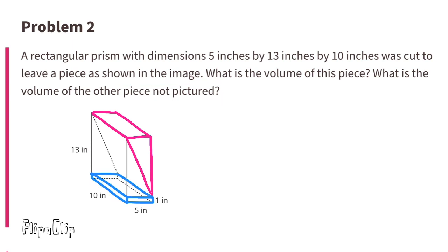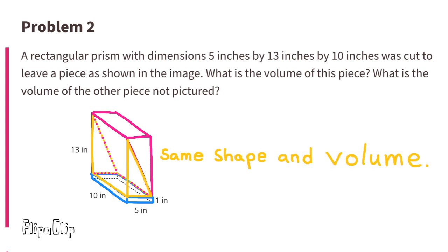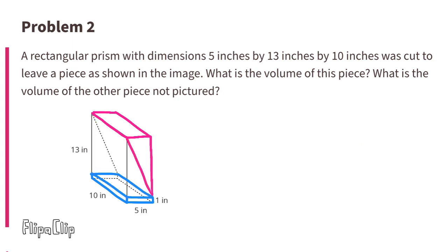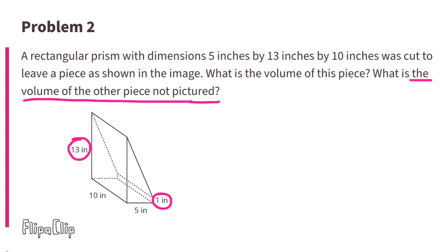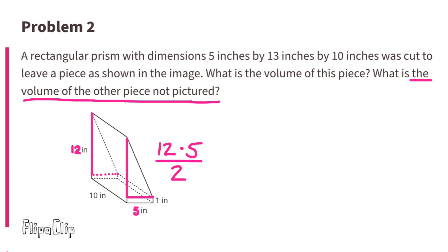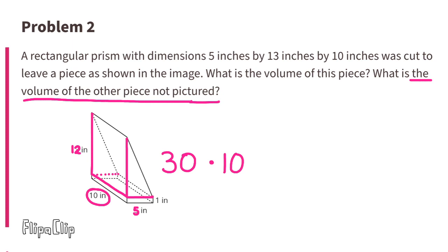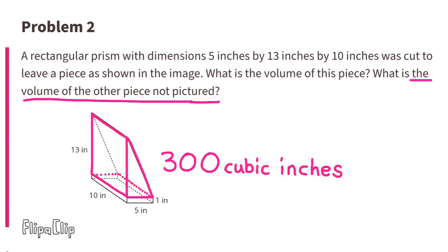I'm going to turn these into three separate shapes: the blue piece on the bottom, and then the yellow piece and the red piece that are the same shape and volume. First, let's find the volume of this red piece. We'll use these as the bases. However, we need to account for this 1-inch section — we need to remove that inch from 13 inches, making it 12 inches. To find the area of this triangle, we multiply 12 times 5, and since it's a triangle, we divide by 2. 60 divided by 2 is 30. Now we multiply the area of the base by the height of the prism: 30 times 10 is 300. So the volume of the piece that's not pictured is 300 cubic inches, or 300 inches to the third power.